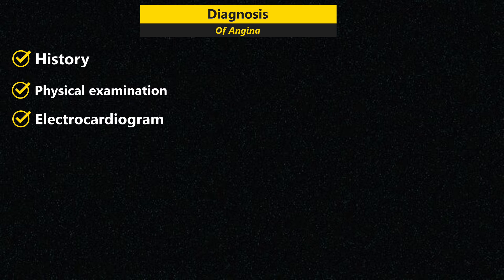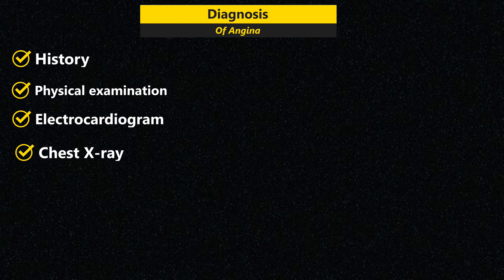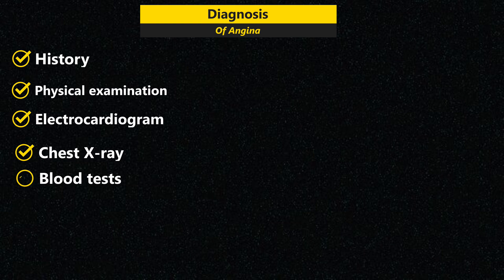Your healthcare provider can also look for patterns in the heart rhythm to see if blood flow through the heart has been slowed or interrupted. A chest X-ray shows the condition of the heart and lungs and may be done to determine if other conditions are causing chest pain symptoms or if the heart is enlarged. Certain heart enzymes enter the bloodstream when the heart muscle is damaged, such as from a heart attack, and a cardiac enzyme blood test can help detect these substances.